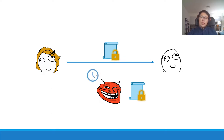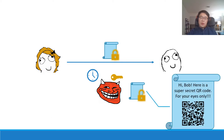At a later point in time — maybe a month, a year, or even 20 years later — Eve is somehow able to get hold of the private key used for the conversation, perhaps through a security breach, social engineering, or by directly interrogating Bob. Eve then uses that valid private key to decrypt the stored ciphertext and retrieve the original message sent by Alice.